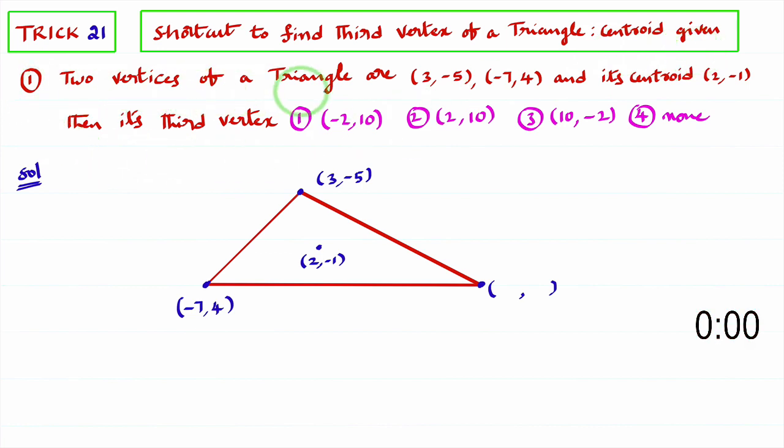You observe this first question. Two vertices of a triangle are given and its centroid is given as 2, minus 1. They are asking to find its third vertex.